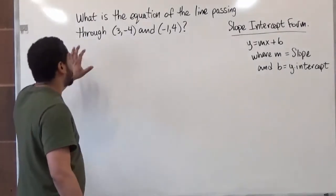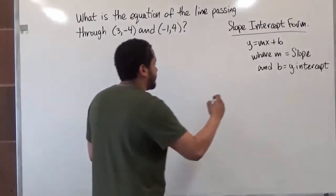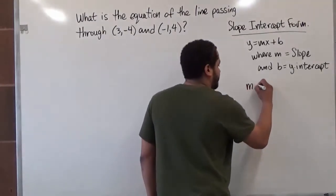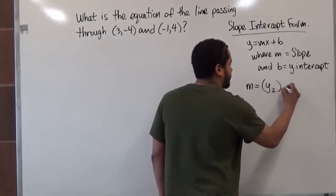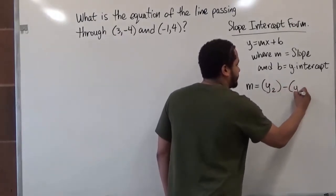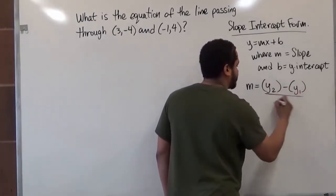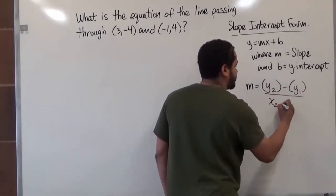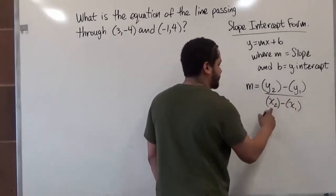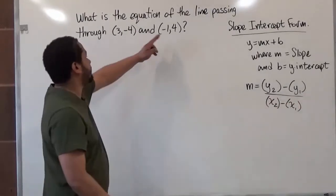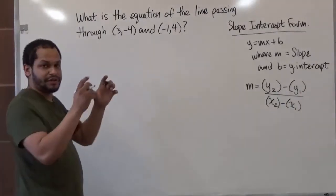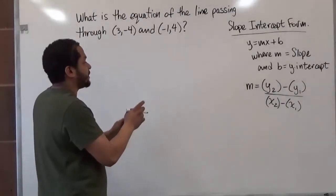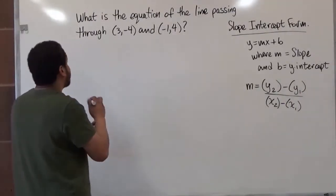To calculate the slope, the slope formula is going to be the coordinates y2 minus y1, divided by x2 minus x1. I put parentheses around these because sometimes we have negative values when we're calculating our slope, and it's important to keep them in parentheses because the sign changes on occasions.